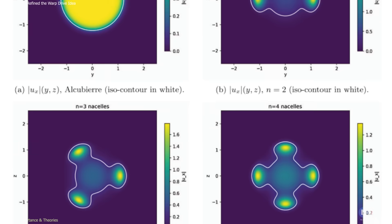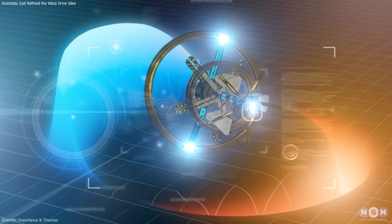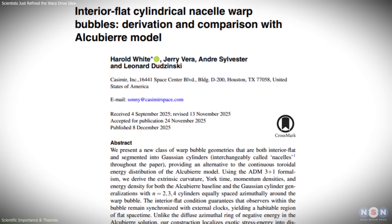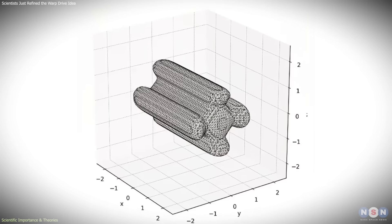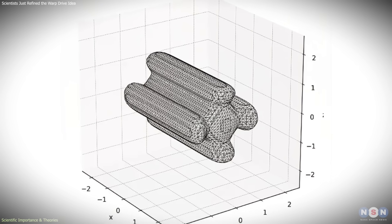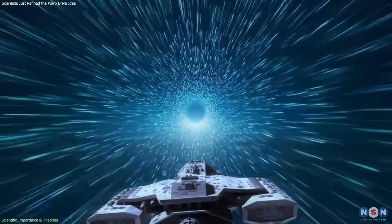When theoretical obstacles are clearly localized, they become easier to analyze and harder to ignore. The work also highlights an interesting convergence between speculative design and physical constraints. Separating high-stress spacetime regions from the spacecraft interior mirrors basic engineering principles, even though this work operates at a purely theoretical level.